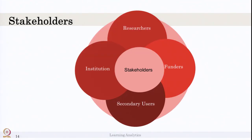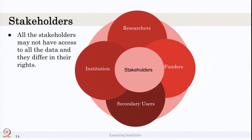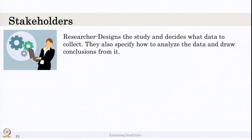There are four stakeholders when it comes to data collection and analysis: researchers, funders, secondary users, and institutions. All stakeholders may not have the same type of access to the data you collect — each has a different data access class. The main question is: what data should be reported to whom? If you are the researcher, you are the one designing and running the study and collecting data, so you have full access — you know what data to collect, how to analyze it, and what conclusions can be drawn.